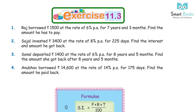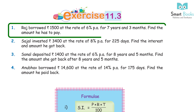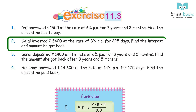Exercise 11.3, Q1: Raj borrowed Rs 1,500 at the rate of 6% PA for 7 years and 3 months. Find the amount he has to pay. Answer: Rs 2,152.50. Q2: Sachal invested Rs 3,400 at the rate of 8% PA for 225 days. Find the interest and amount he got back. Answer: Rs 3,567.67.